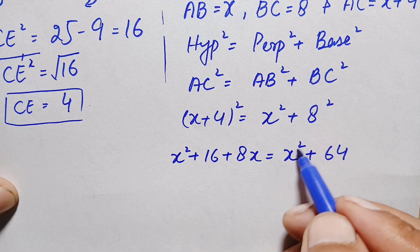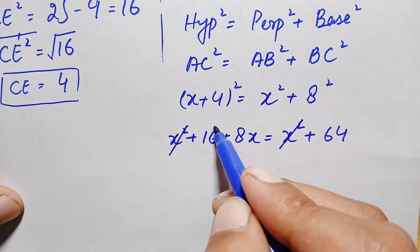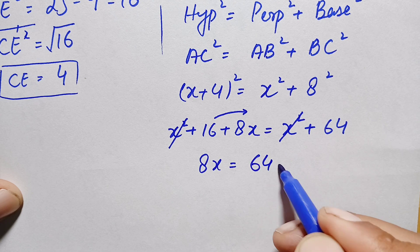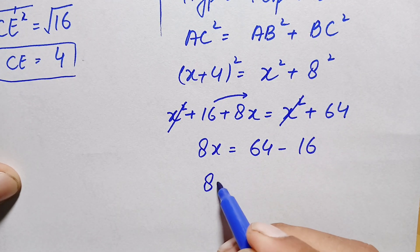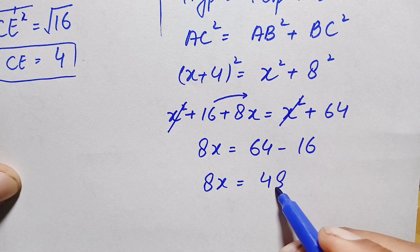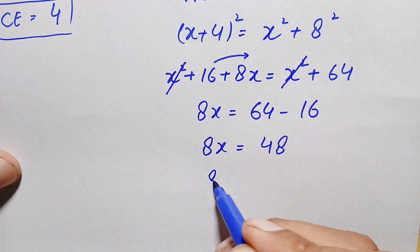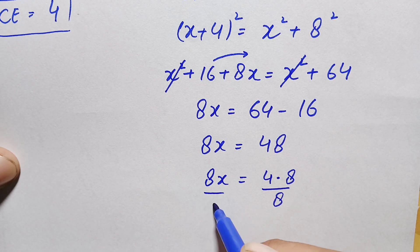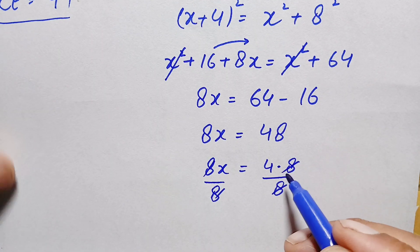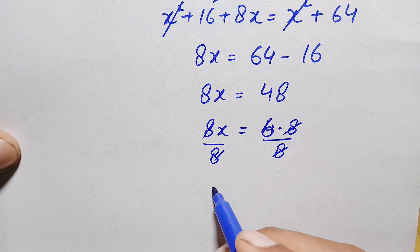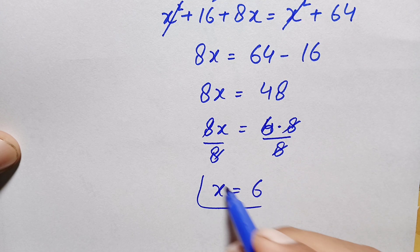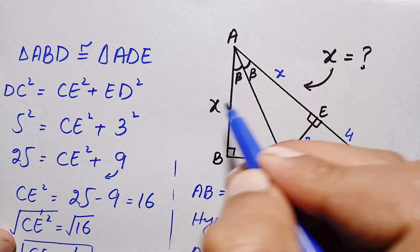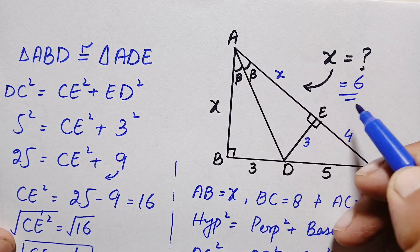Since x squared appears on both sides, we can cancel them. Taking the constant to the right-hand side: 8x equals 64 minus 16, which is 48. Dividing both sides by 8, x equals 6 units. So the final answer is that the perpendicular and height of this bigger right angle triangle ABC is 6 units.